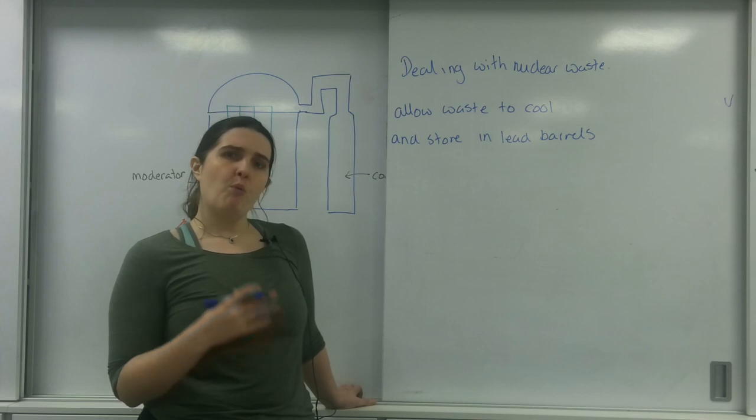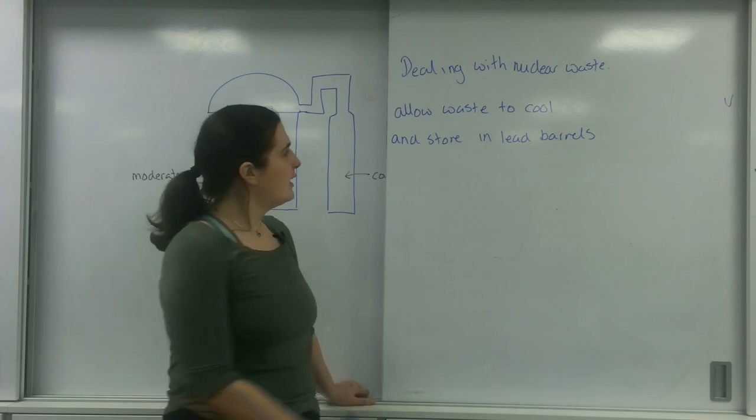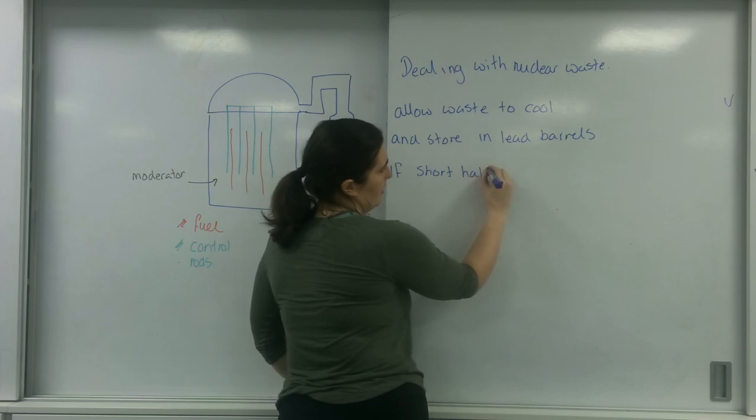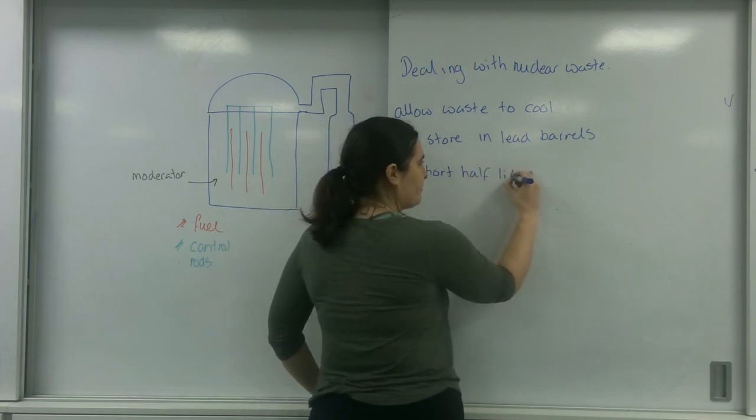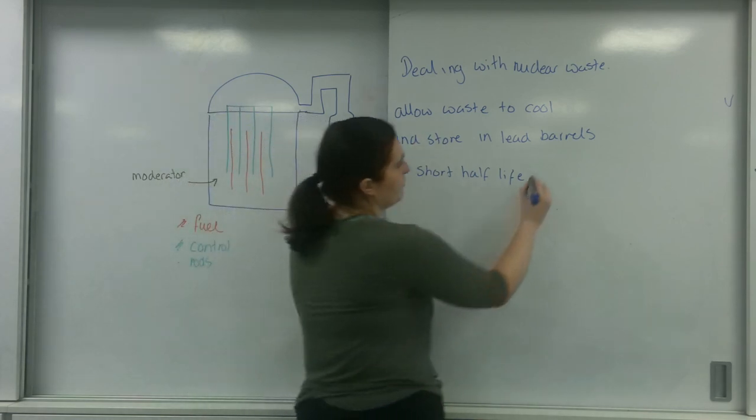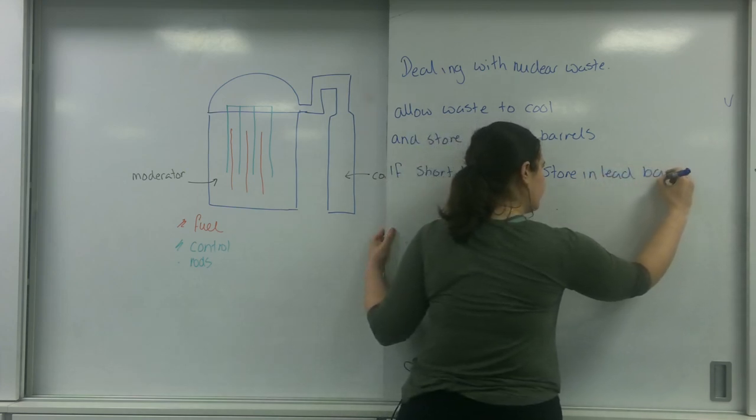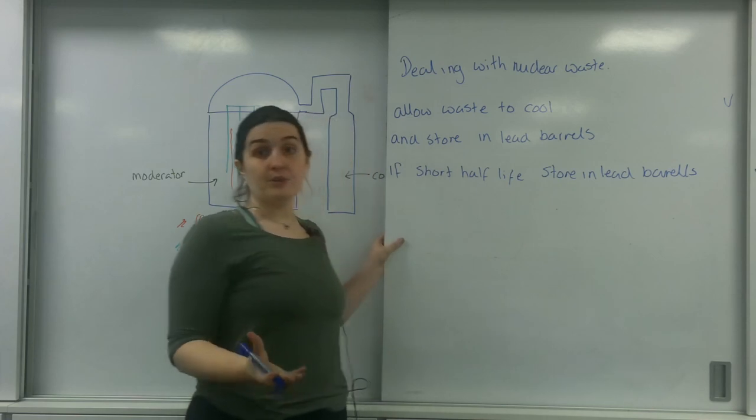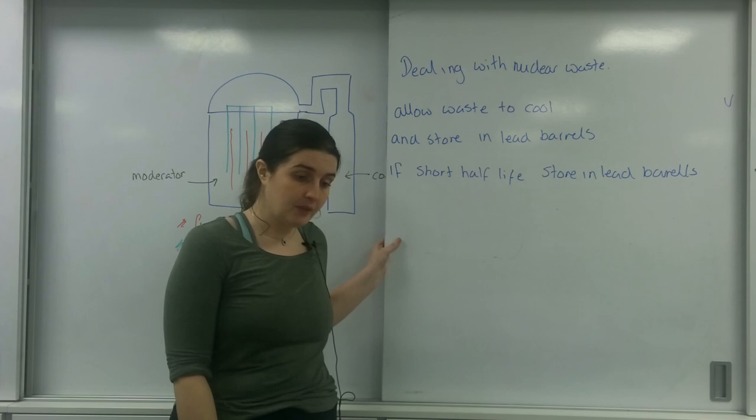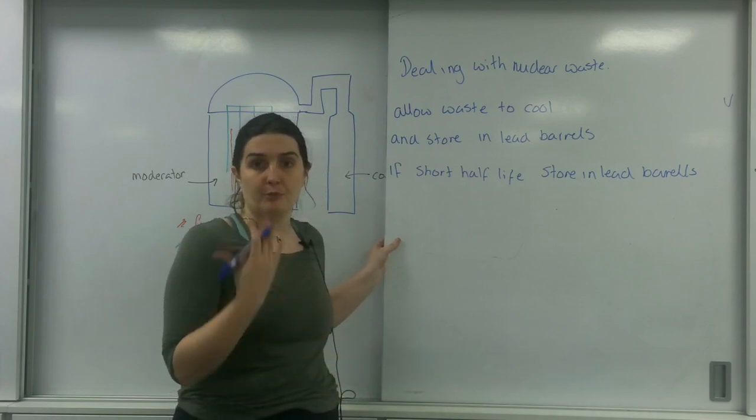Now depending on what waste it is, depending on the half-life of the waste, depends how you store it from now on. If a short half-life, which means that it will decay after a while, you can store it in these lead barrels. Places like Sellafield, this is one of the ways they used to store the nuclear waste that happened up there. They may have a special confined area for that, places that are under protection.